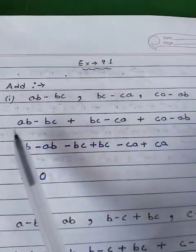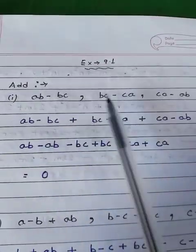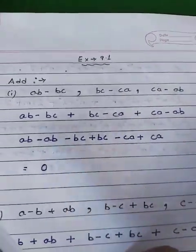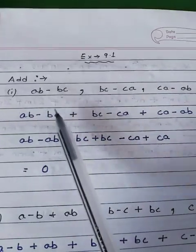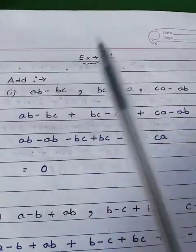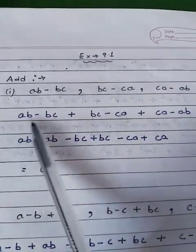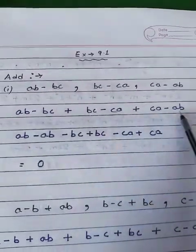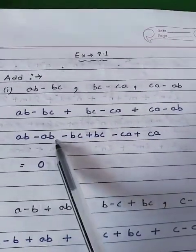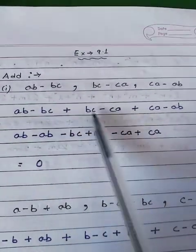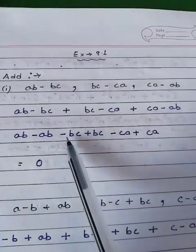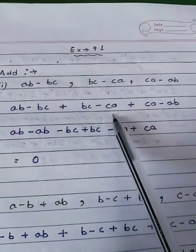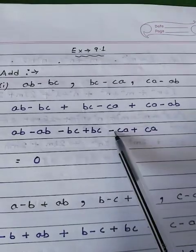So now, bring all the same variables together — that is, the like terms together. So ab with ab, bc with bc, ca with ca. ab is there, and yes there is another ab — so ab and minus ab are put together. bc and bc are already together, so minus bc plus bc. ca and ca are already together, so minus ca plus ca.